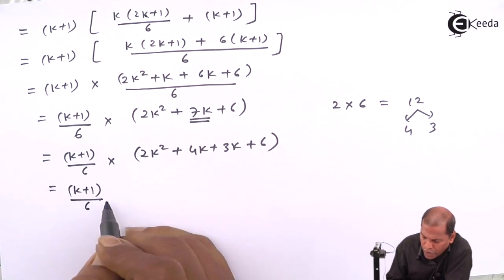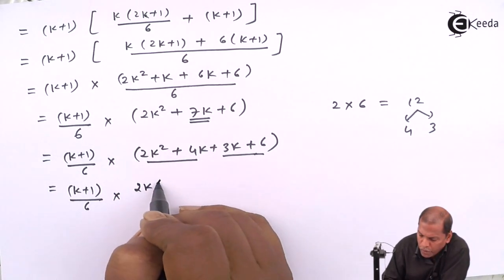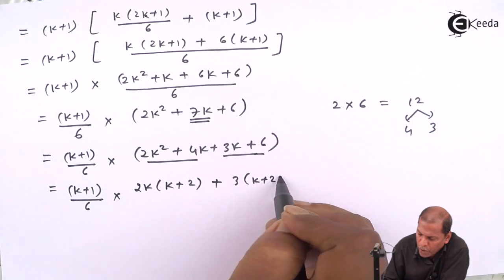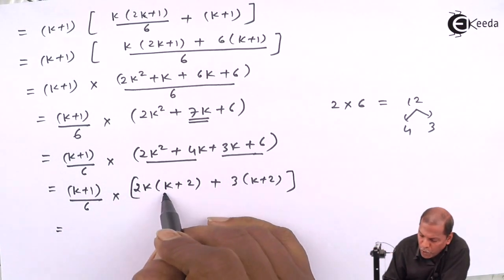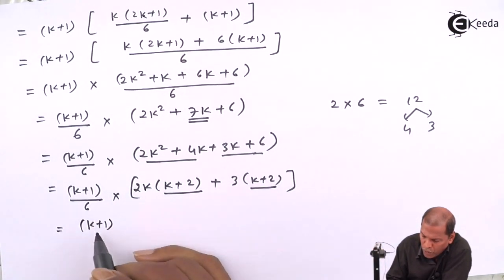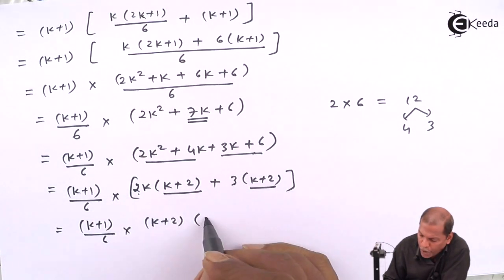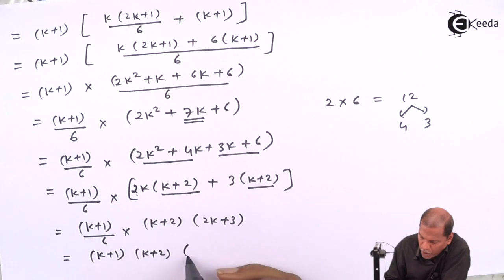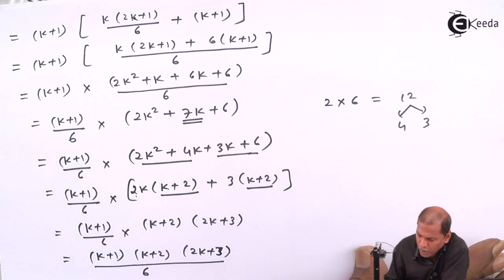So that equals (K+1) upon 6 into — here we make groups of two terms. From the first group we take 2K common, giving 2K(K+2). From the second group we take 3 common, giving 3(K+2). Now from both groups we take (K+2) common. So we have (K+1) upon 6 into (K+2)(2K+3). So in this way we prove (K+1)(K+2)(2K+3) divided by 6, which is nothing but equal to RHS.